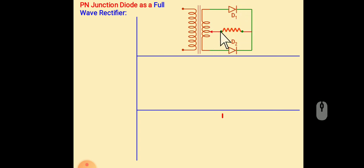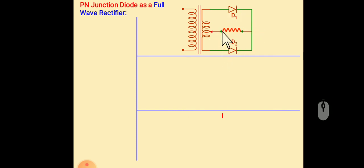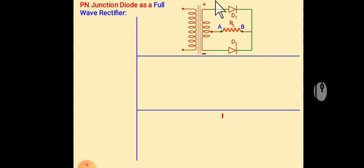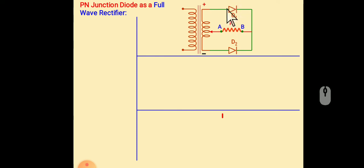That means the center of the transformer is tapped by the output, and here we will connect a load. So for positive half cycle, this terminal becomes forward bias because positive terminal is connected to P type. So D1 becomes forward bias and we get the output.